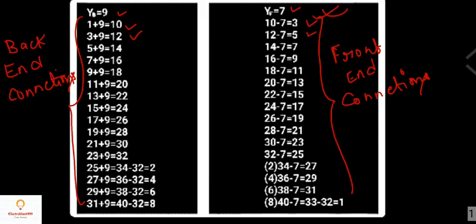This pattern continues up to conductor 25. Up to 25 it is quite simple to follow — the same back-end and front-end additions and subtractions continue straightforwardly.